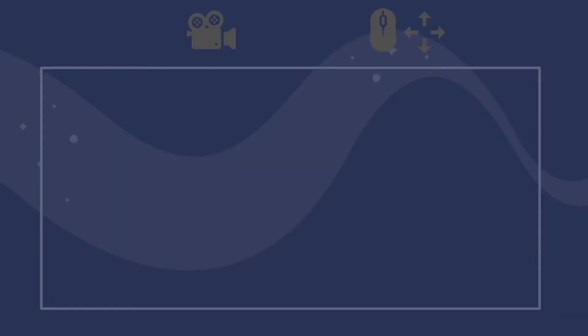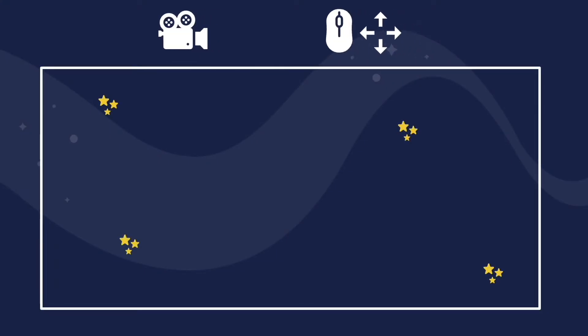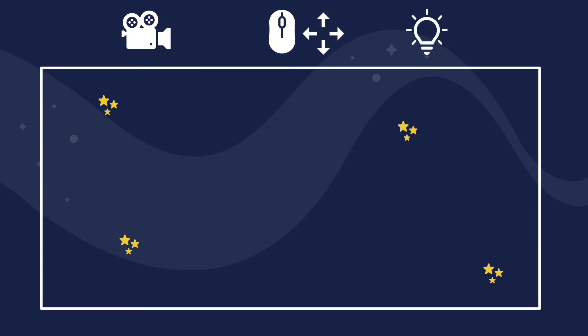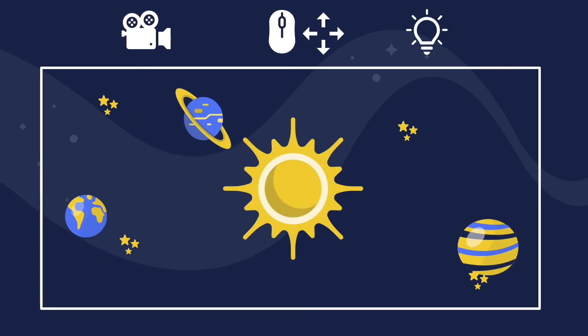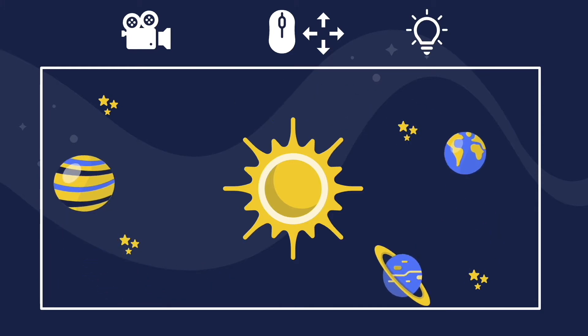First, we will set up our working environment, add a camera, controls, background, lights, planets, and their movements. Thus, we will get a solar system.